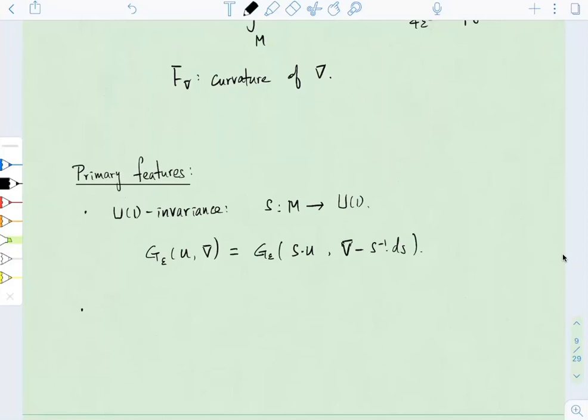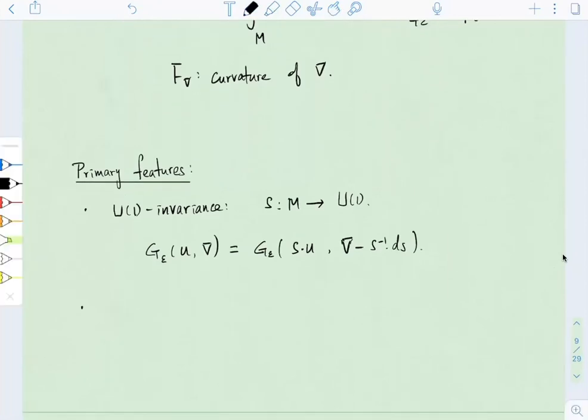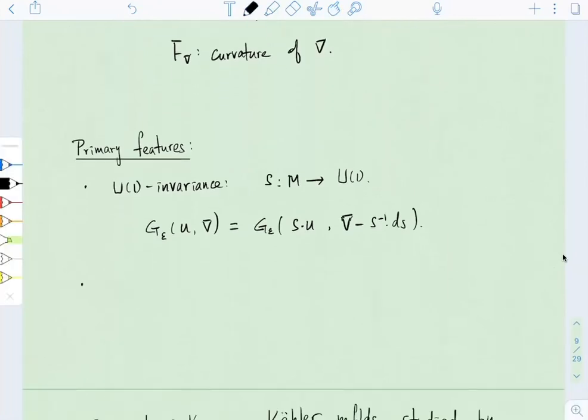By contrast, for the Euler-Lagrange equation, for this functional, there are many interesting finite energy solutions on R2. And one very interesting property these have is that they all have quantized energies, so their energies are all integer multiples of a fixed number.